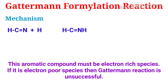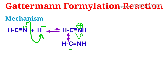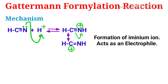Now, what is the mechanism of this reaction? The mechanism is very simple. When hydrogen cyanide is under the influence of a strong acid, the nitrogen of hydrogen cyanide becomes protonated to generate an ionic species — that is, the formation of an iminium ion — and it acts as an electrophile.